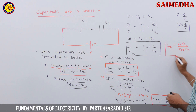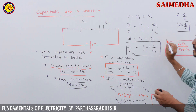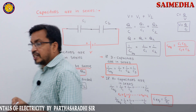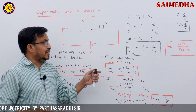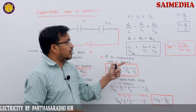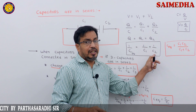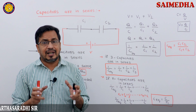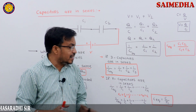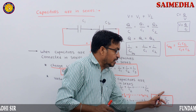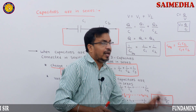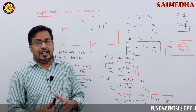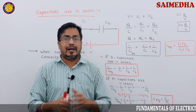When capacitors are connected in series, charge will be the same and voltage will be divided. 1 by C equivalent equals 1 by C1 plus 1 by C2. For N equal capacitors in series, C equivalent equals C by N. Now, we will discuss when capacitors are connected in parallel.